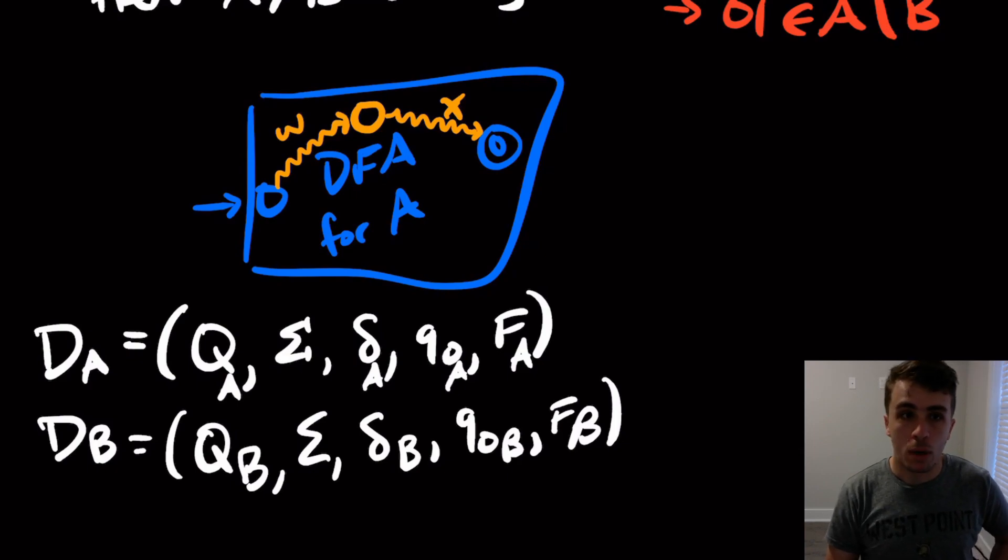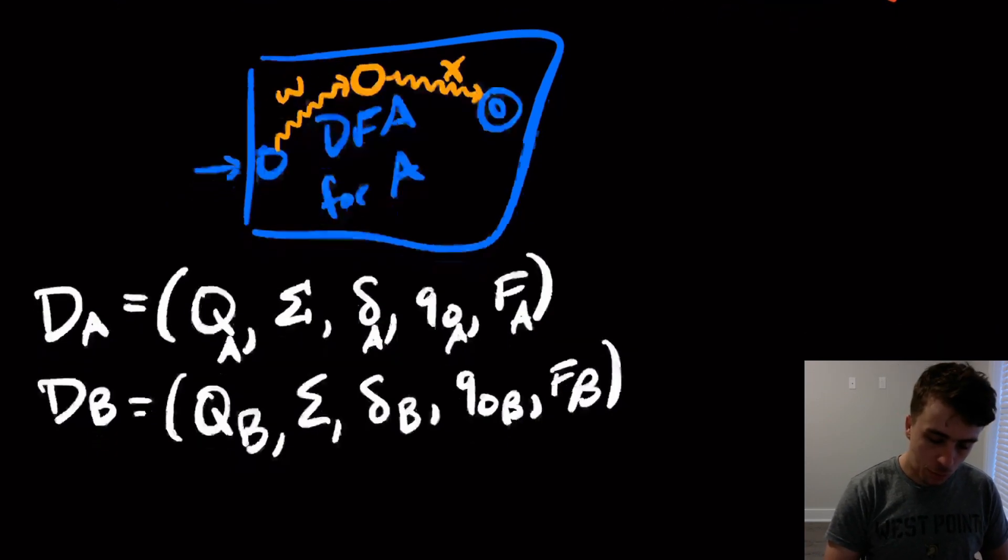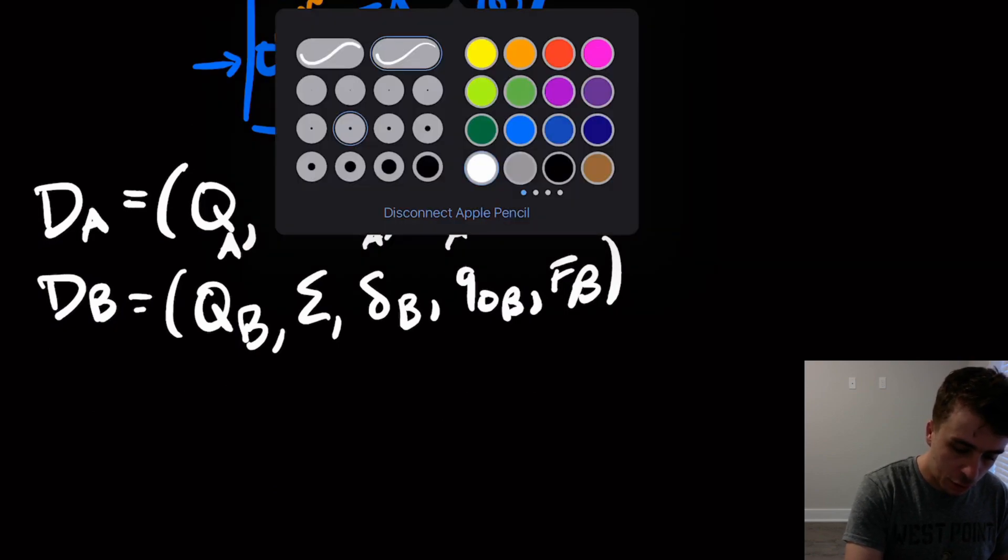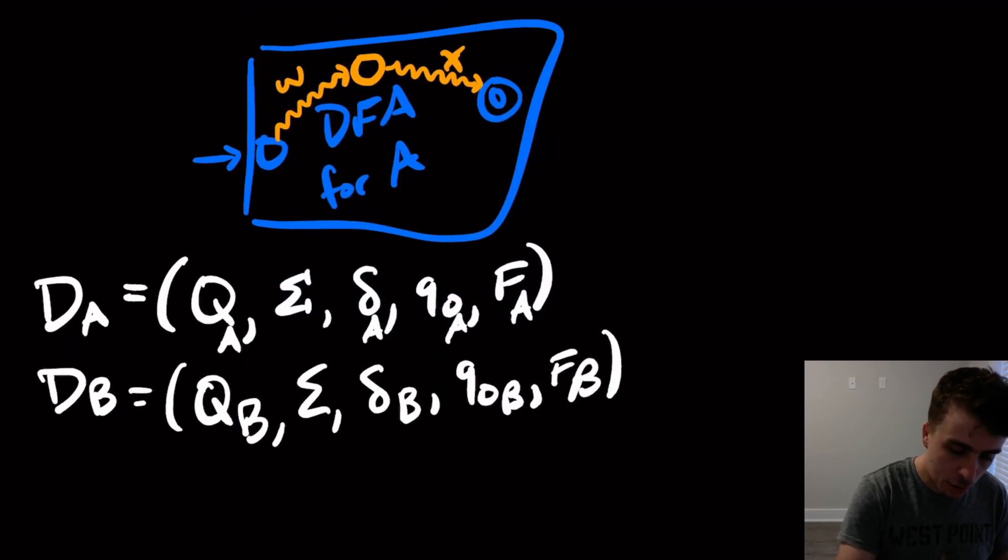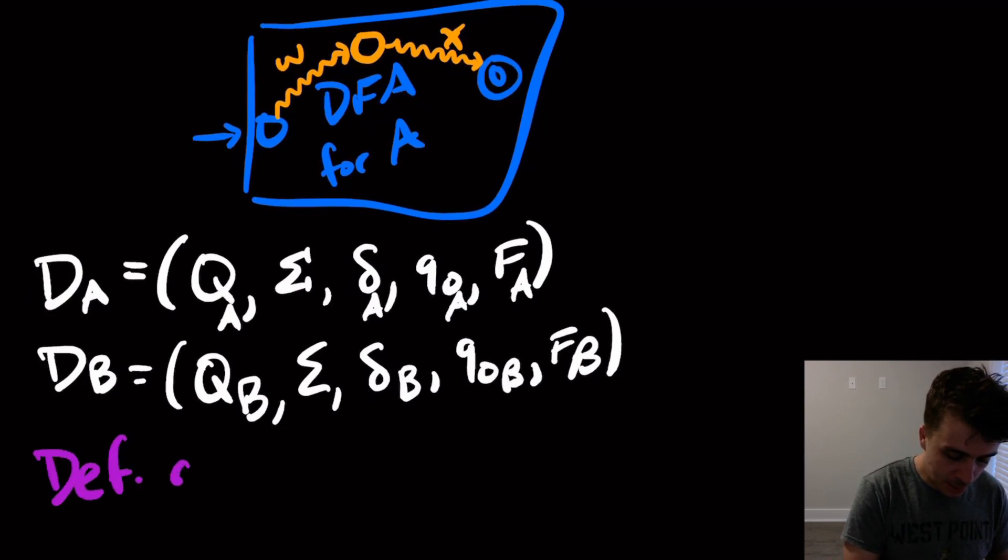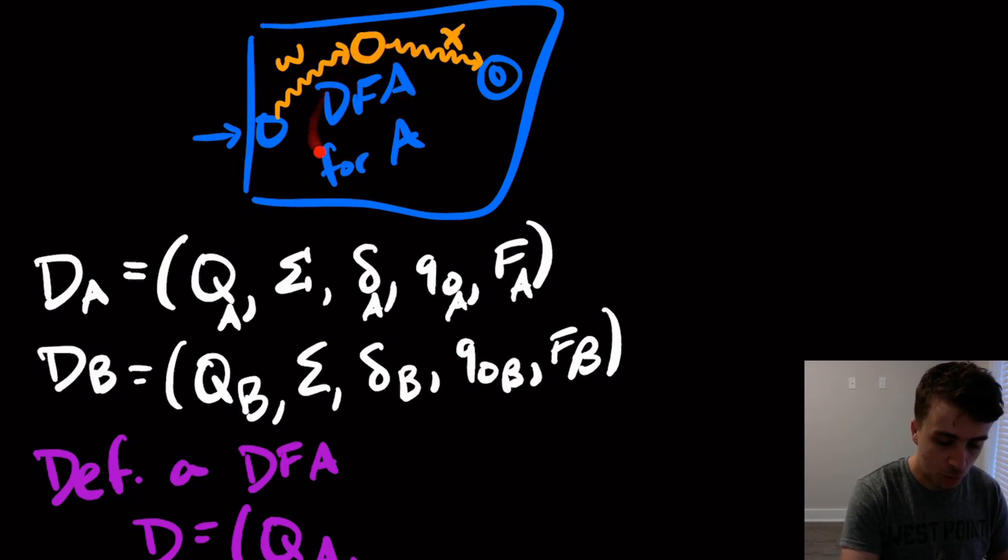So what do we want to do here? So what we want to do is we want to note in our construction here, we didn't actually change any of the structure of the DFA here. All that we're doing is changing what a final state is. So we're not even going to use the DFA for B here. So let's define a DFA, I'm going to call it D, so here the states are going to be the same as A's because we want this to be a DFA for A and then take away the parts that belong to B.